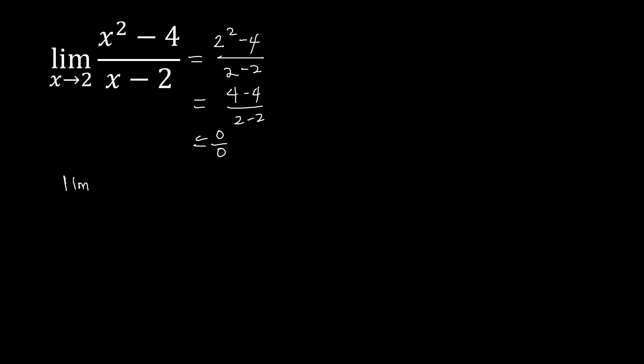So we have the limit of x squared minus 4. This is the difference of two perfect square binomials. We factor it by taking the square root of the first term, which is x, giving us x minus 2 times x plus 2. Then we copy over the denominator x minus 2, as x approaches 2.